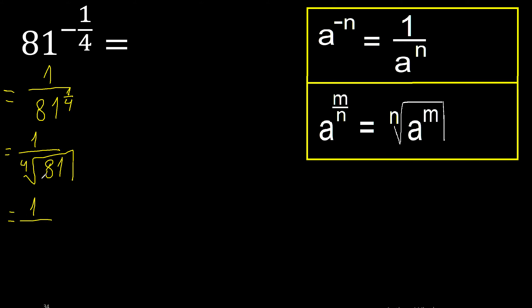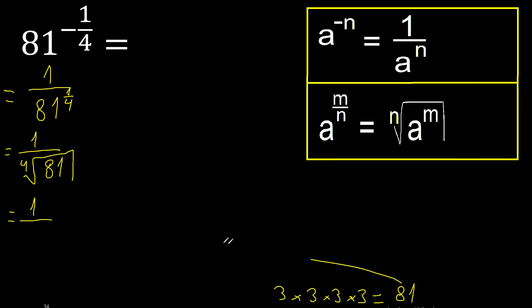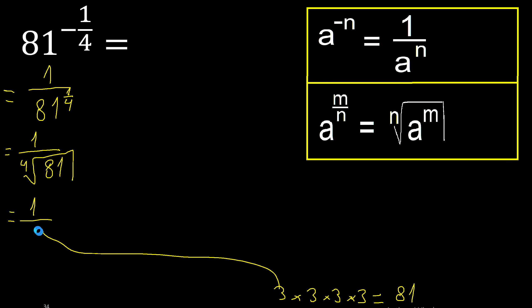Fold equal numbers that multiply is 81. Fold equal numbers: 3 multiplied by 3 is 9, multiplied by 9 is 81. Okay, therefore here — finish.